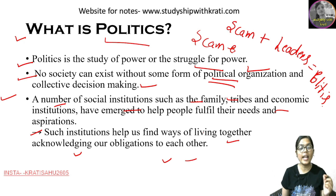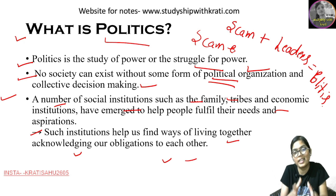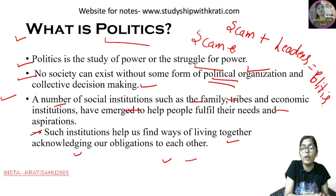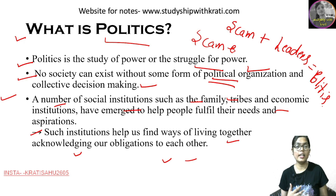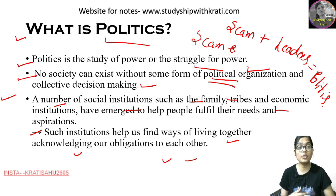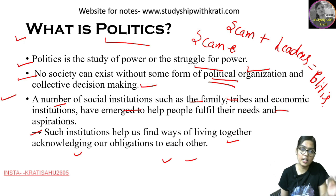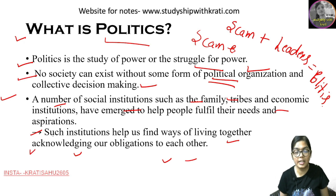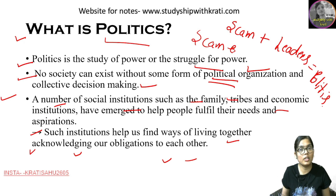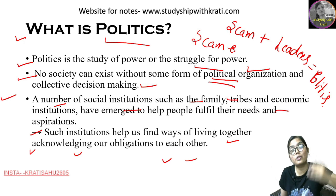Such institutions help us find a way of living together, acknowledging our obligation to each other. When we talk about society, we are actually bound in obligation — there are some limitations and restrictions on us. This responsibility belongs to the political organization because they are supposed to take collective decisions. Every individual can't take a decision for each individual. If we have to run the country, we need representatives who will rule on our behalf.